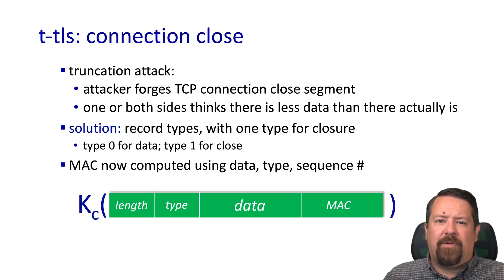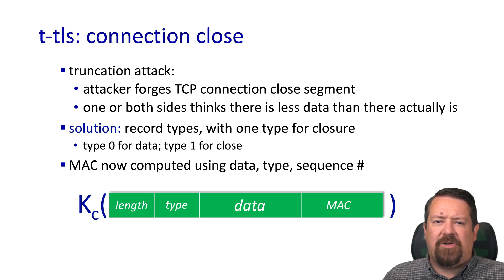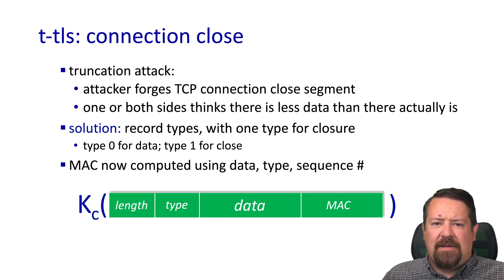We also mentioned a connection closing procedure. A potential attack is that the attacker might truncate the connection by forging the TCP connection close segment. Recall that TCP flags control when the session is closed, and again, that's not protected by encryption. The solution is to introduce record types and have a particular type for closure. That type will be inside the encryption and so not subject to forgery by the attacker.